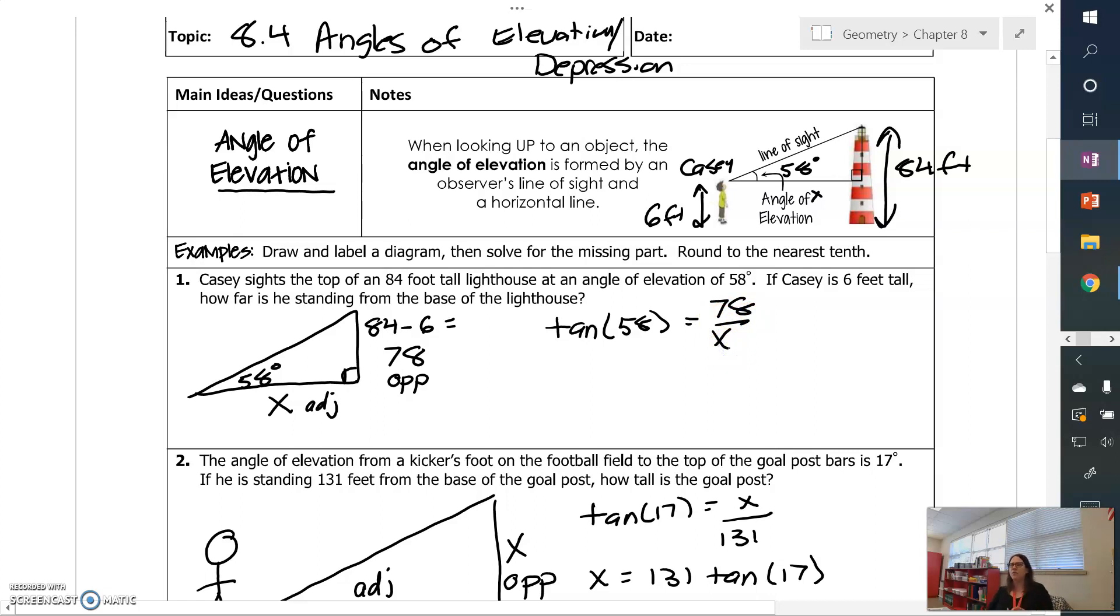And I hope you've noticed that when you multiply both sides by X, what happens is that X and our trig ratio actually trade places. So I'm going to get X equals 78 over tangent of 58. And that's what I'm going to plug into my calculator. So 78 divided by tangent of 58. I get 48.7 feet.